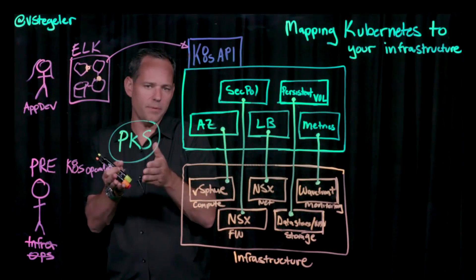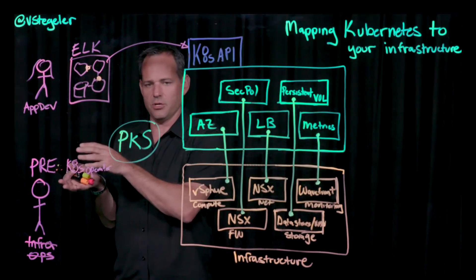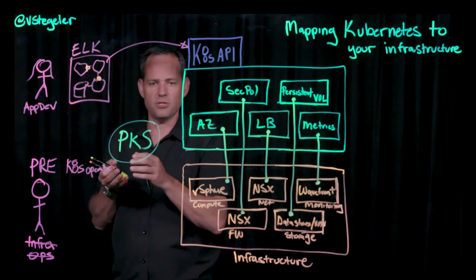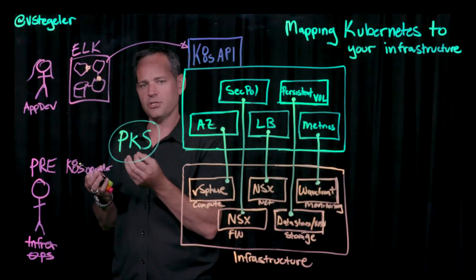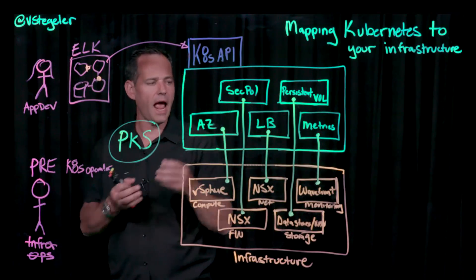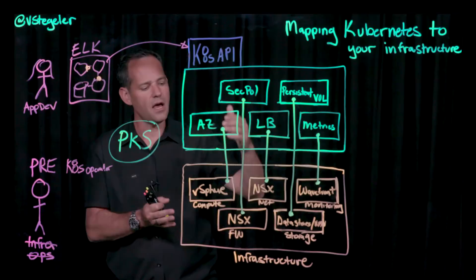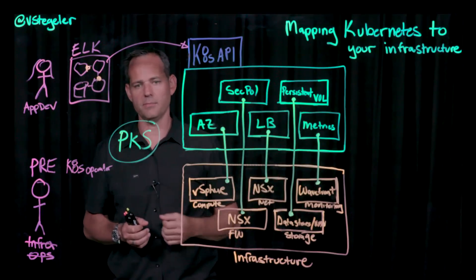PKS can leverage all of the software defined data center and automatically create this connectivity. As we deploy PKS, we'll feed it information about where vCenter is, information about where the NSX controllers are.